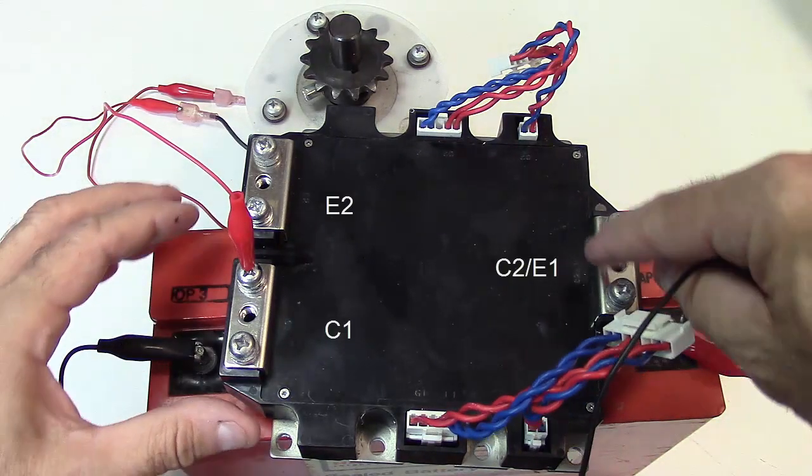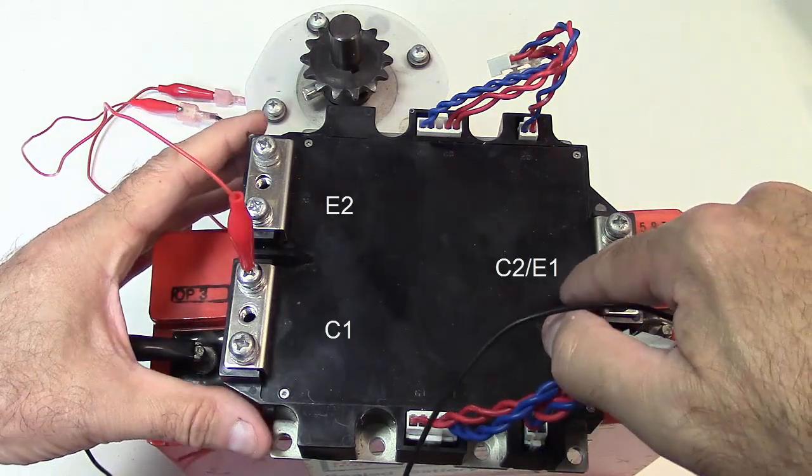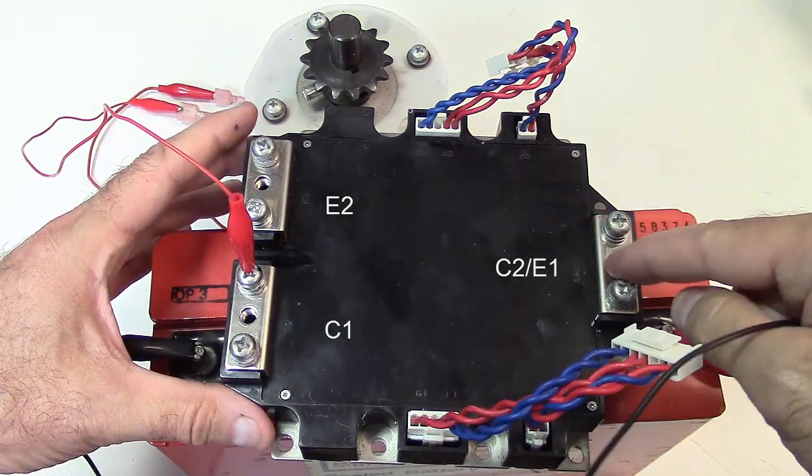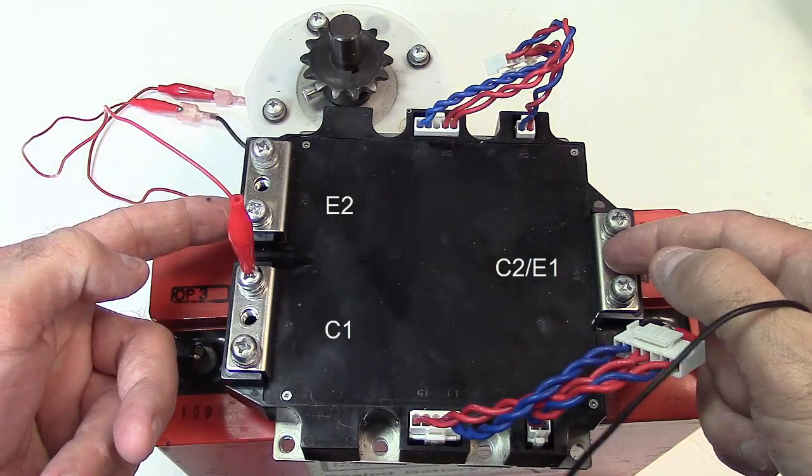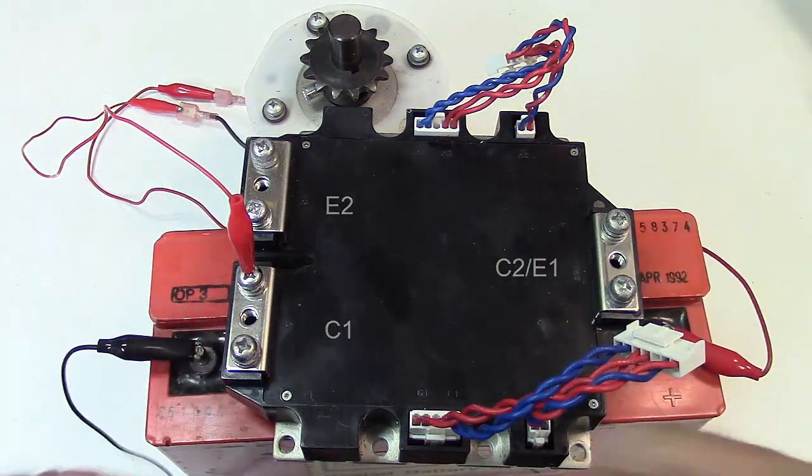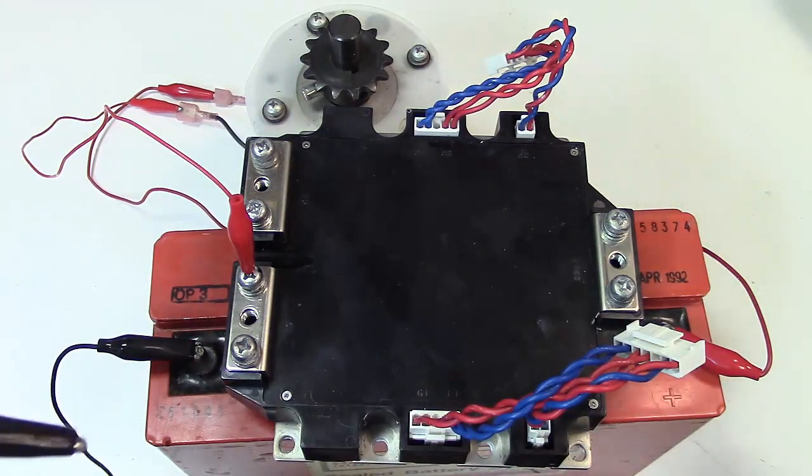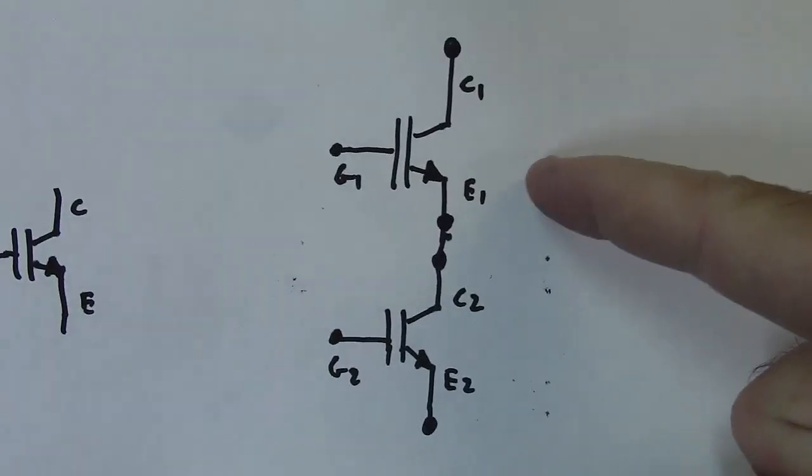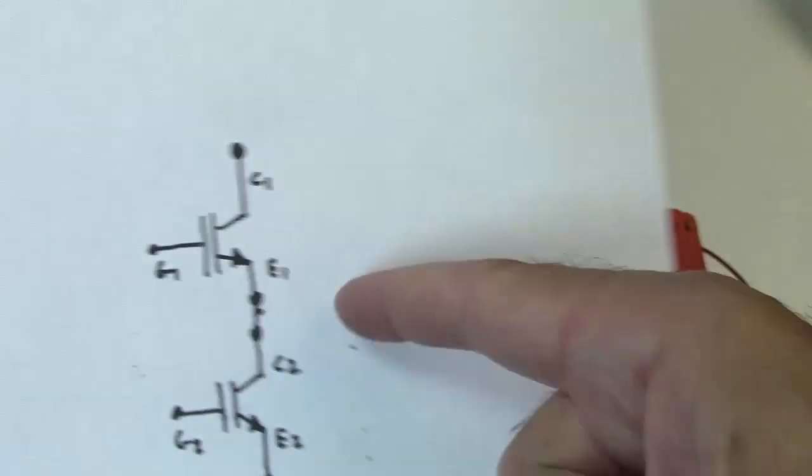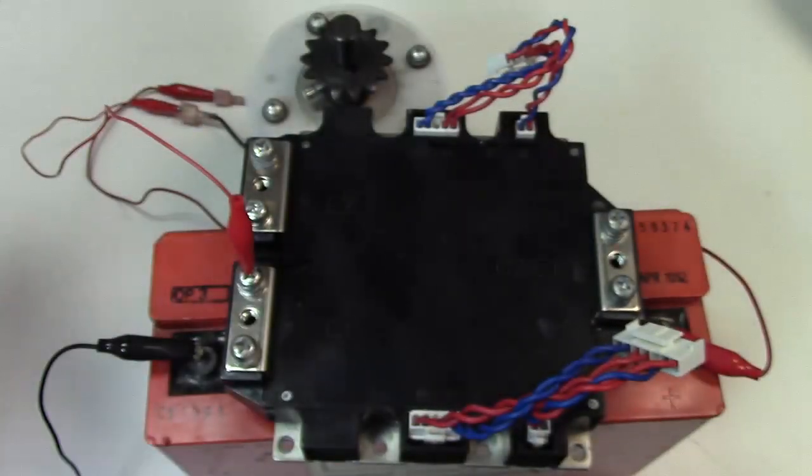This actually says E1, C2. So these are the common connection between C1 and E2, which is on my diagram right here. The common connection between C2 and E1 is right here. So my C2 and E1 are connected right here.